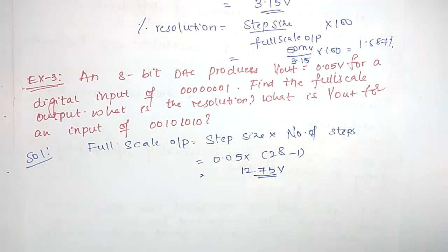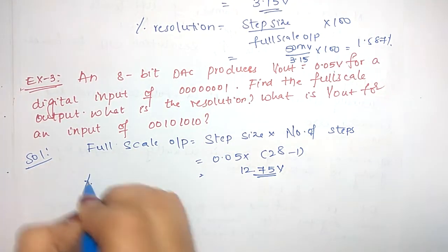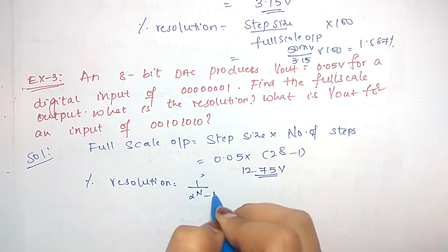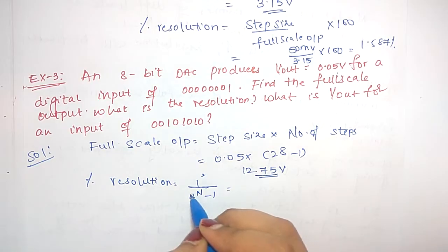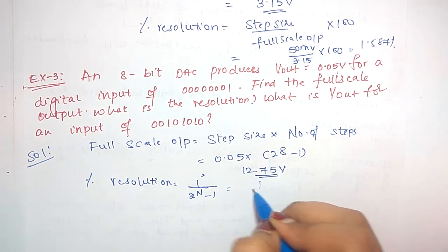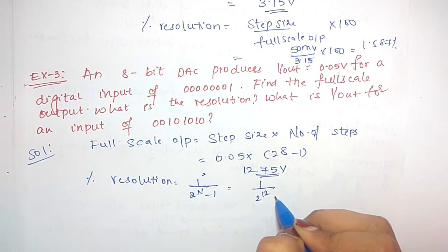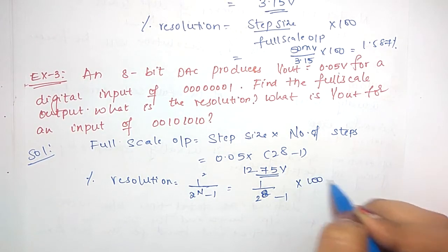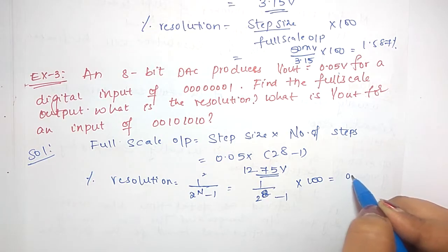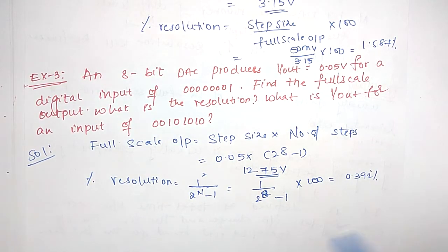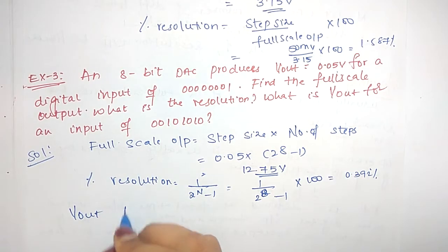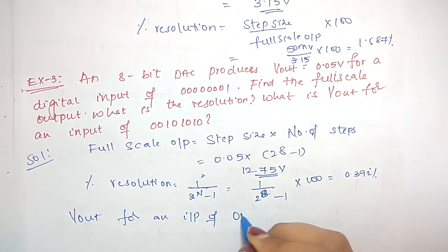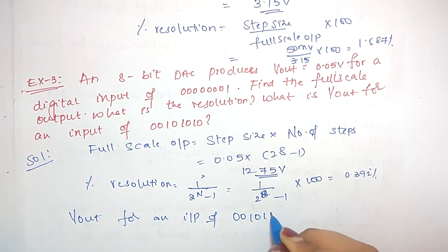Now for resolution — again using 1 divided by (2 power n minus 1) or step size divided by full scale. With n equals 8 bits: 1 divided by (2 power 8 minus 1) into 100, which gives 0.392%.